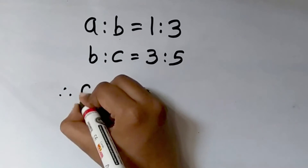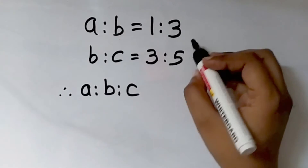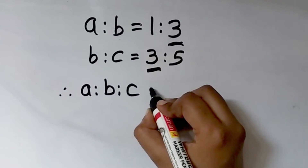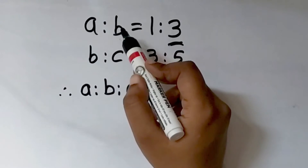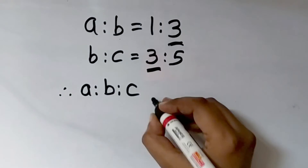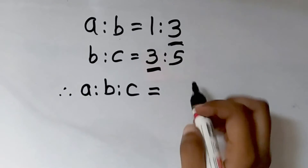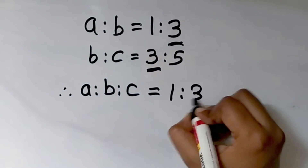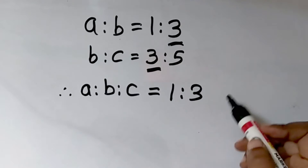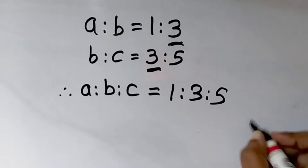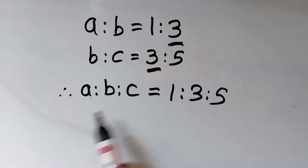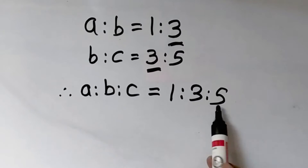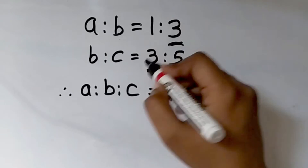Therefore A is to B is to C. See, the value of B in both the ratios is the same — here it is 3 and here also it is 3. So we have to check that the second term of the first ratio and the first term of the second ratio should be same. So we can combine and write the answer: A is to B is to C will be equal to 1 is to 3 is to 5. That is, A is to B is 1 is to 3, and B is to C is 3 is to 5; 3 is already written, so we get 1 is to 3 is to 5.